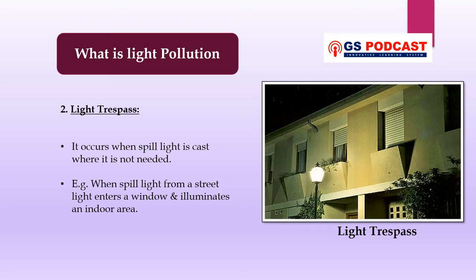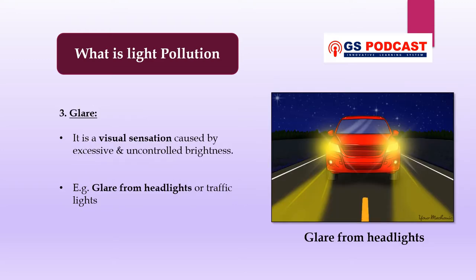The second component is light trespass, which occurs when spill light is cast where it is not needed. An example of light trespass is when spill light from a street light enters a window and illuminates an indoor area or entire room. The third component is glare, which is a visual sensation caused by excessive and uncontrolled brightness. It can be disabling or simply uncomfortable — for example, glare from car headlights or traffic lights, which can impair the ability to drive at night.